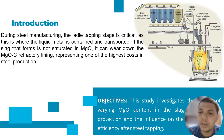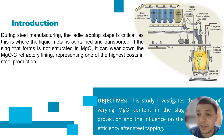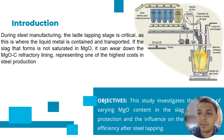The objective of this study is to investigate the impact of varying MgO content in the slag on refractory protection and the influence on desulfurization efficiency after steel tapping.